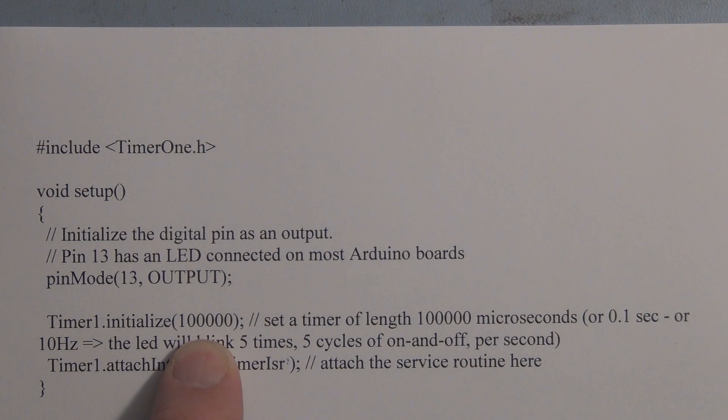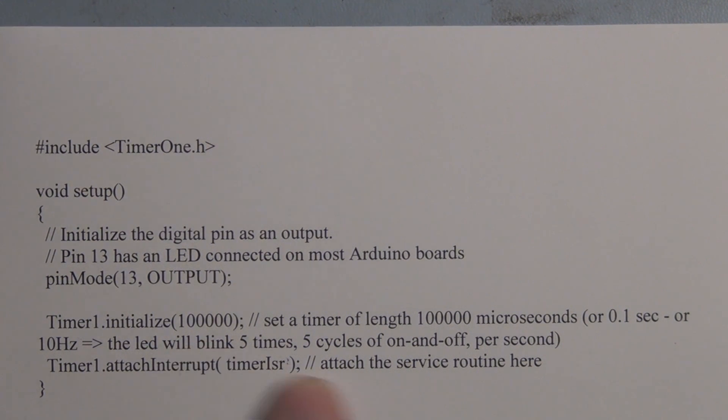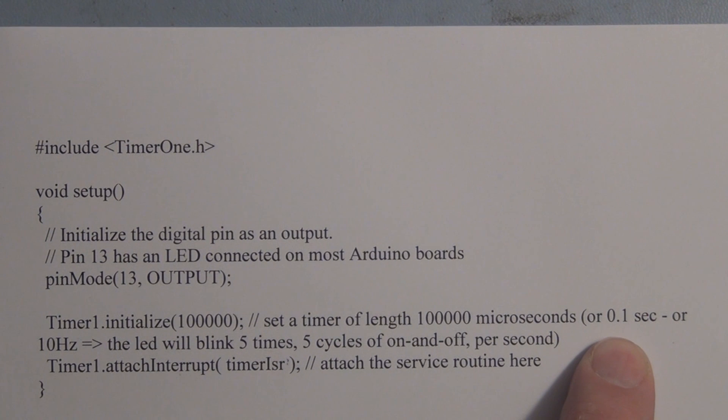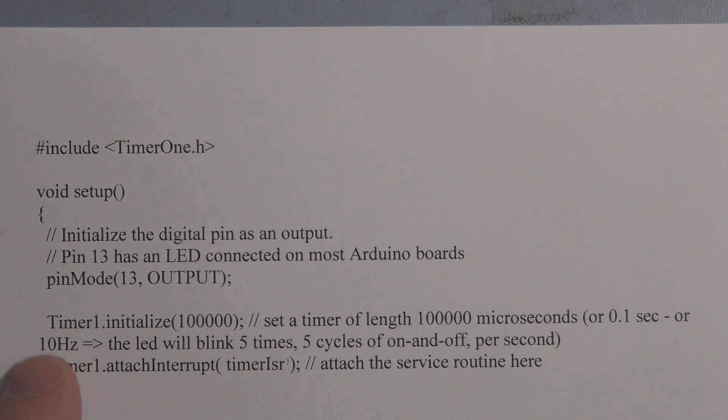Here we can use Timer1.initialize to set the length of the timer. We have 100,000, that's in microseconds. So 100,000 microseconds or 0.1 seconds is equal to 10 Hertz, and this will blink the LED five times on and five times off per second.